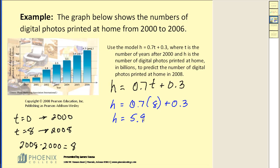So what's our answer? Well, before we figure that out, let's see if that makes sense. If we look back at the graph, the projection in 2006 is 4.5. Since the trend is upward, 5.9 is a reasonable answer. However, if you look back at the problem, H is in billions. So our final answer would be 5.9 billion photos.